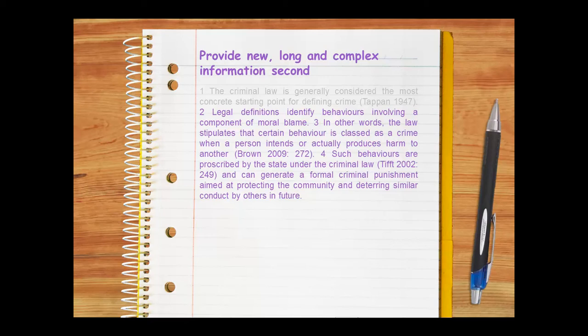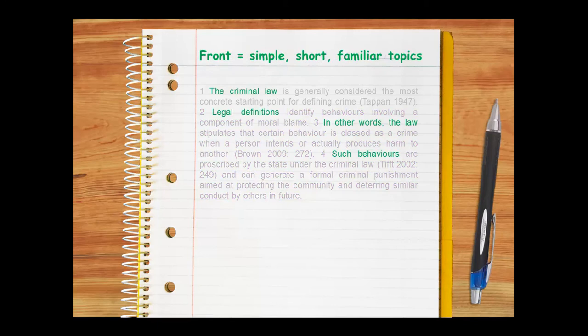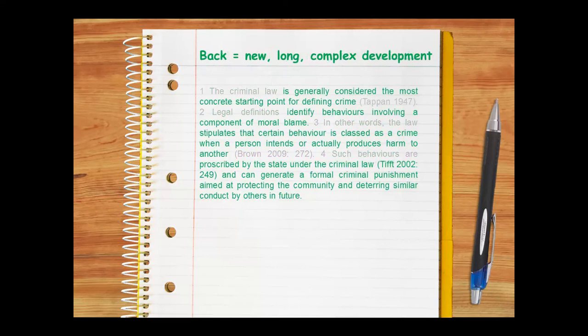Sentence structure also contributes to cohesion. Like the paragraph as a whole, the front of each sentence begins with simple, short, familiar topics, and the back of each sentence develops these topics with new, long, complex ideas. Just as paragraph structure and sentence structure aid cohesion, so too do sentence links. These include front-to-front and back-to-front links, as well as explicit cohesive markers.